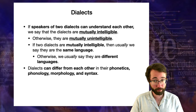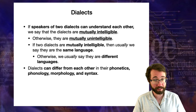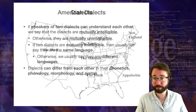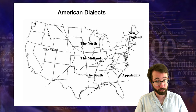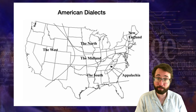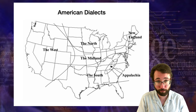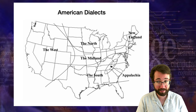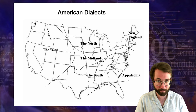Dialects can differ from each other not only in their sounds, but also in their morphology and in their syntax. We will resume with our tour of American dialects, and then when we're done with that, we're going to talk about dialects that are not based on geography — dialects based on other forms of speech communities — and the question of where standard dialects come from.